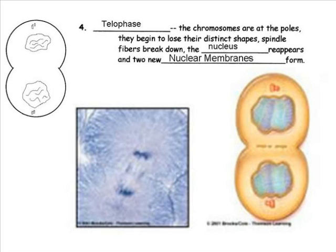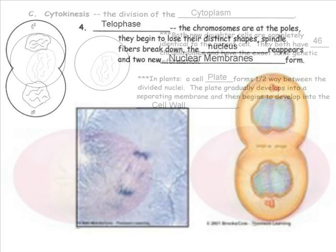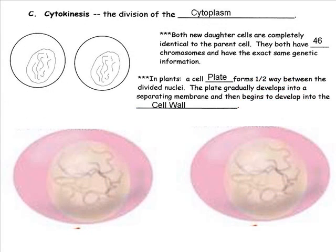The last step of the cell cycle is cytokinesis, or division of the cytoplasm. During cytokinesis, the cell membrane pinches inward, dividing the cell's organelles and cytoplasm between the two new cells. At the end of cytokinesis, there are two identical cells, each with 46 chromosomes and identical genetic information. The major difference in plant cells is that a cell plate divides the cytoplasm, and the cell plate becomes the cell wall.